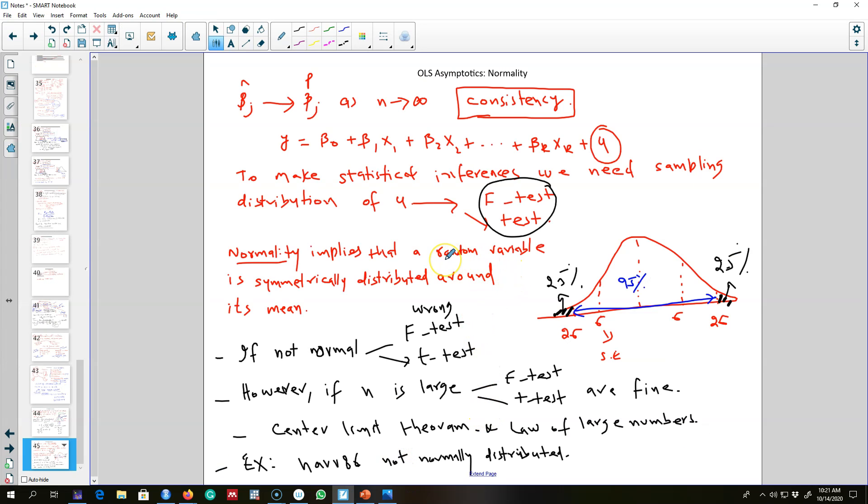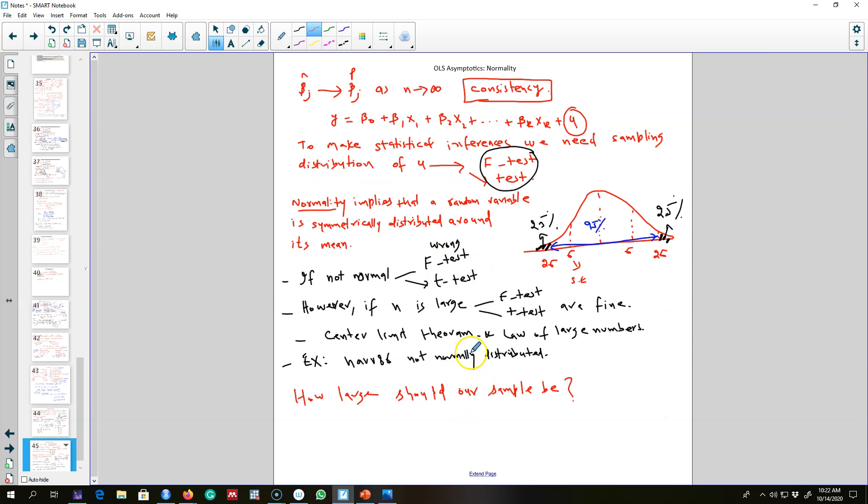What we are saying here is that when n gets larger and larger, our f-test value and t-test value are still valid. We said that f-test and t-tests are not valid if a variable is not normally distributed because we cannot make statistical inferences using this curve and area under the curve. But if the sample size is large enough, then f-test and t-tests both are valid and we can use both of those tests to make statistical inferences.